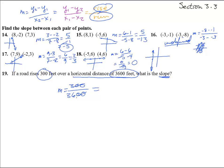300 over 3,600. This reduces down. Divide by 100. 3 divided by 36. That is a slope of 1 twelfth. If you punch that into your calculator, you'll notice it's a .085. That is an 8.5% road grade. For those of you that know what that is. Good.